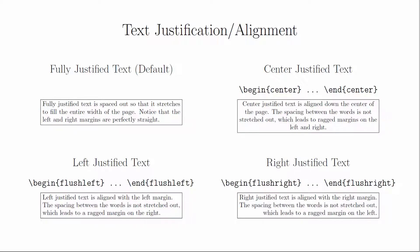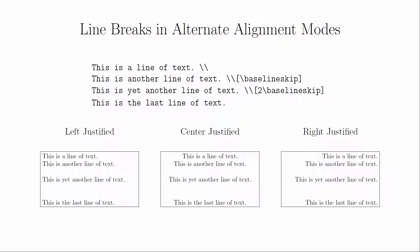To right justify the text, put it between a begin flush right and end flush right. When you're in these alternate alignment modes, you can use a double backslash to start a new line. You can add extra spacing by putting in a measurement inside of the square brackets immediately after the double backslash. This example shows you how to get one and two blank lines. Don't worry too much about what baseline skip means for now.